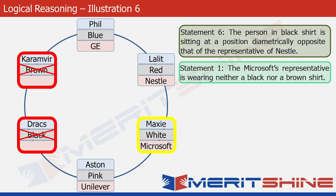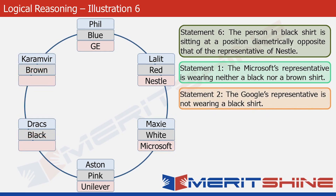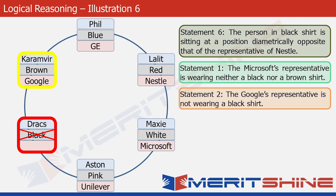Let's look at statement two. It states that Google's representative is not wearing a black shirt. So Google cannot appear in the black-shirt box, and the only position left where we can place Google is the remaining highlighted box. So we write Google there and move forward.